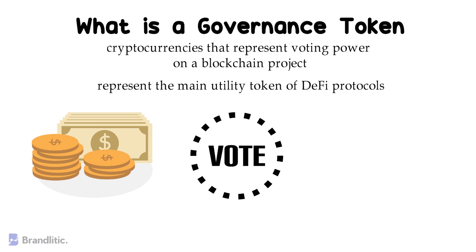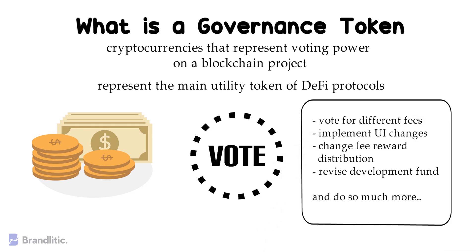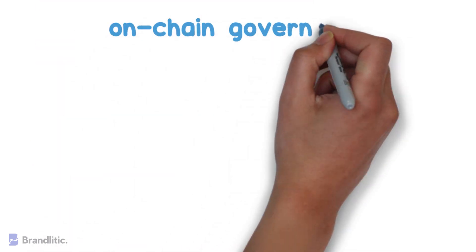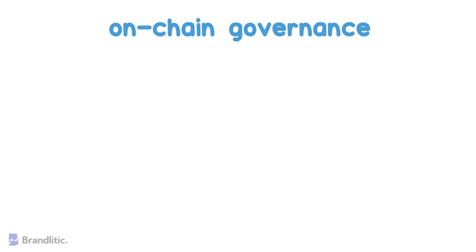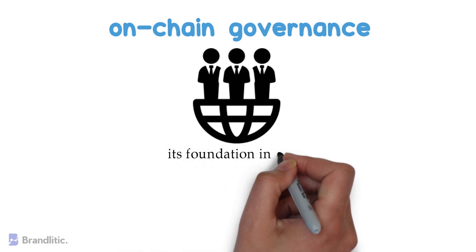With the help of these, it is possible to: 1. Vote for different fees, 2. Implement UI changes, 3. Change fee reward distribution, 4. Revise development fund. Here, distributing control among stakeholders in this way is called on-chain governance, and the powers denoted by governance tokens may include traditional management roles and the authority to change the project's protocol, i.e., its foundation in code.